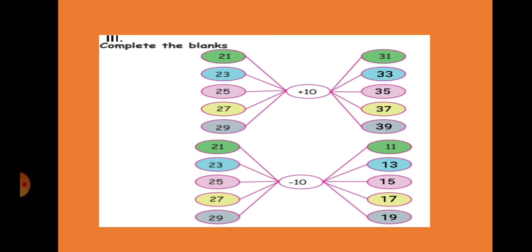Now this is the last part. See here, 21, 23, 25, 27, 29. These are all numbers they give. This plus 10, for all these numbers we have to add 10. So 21 plus 10, how much? 31, plus 1. For the tens number we have to add plus 1. 23 plus 10, 33. 25 plus 10, 35. 27 plus 10, 37. 29 plus 10, 39.